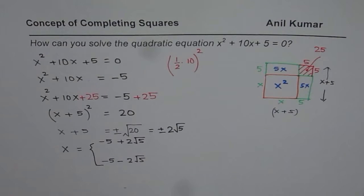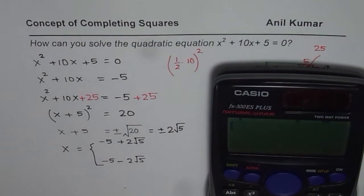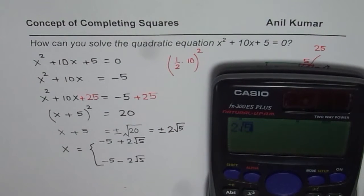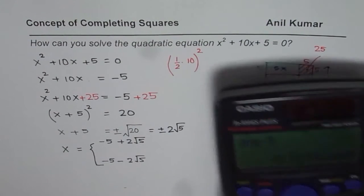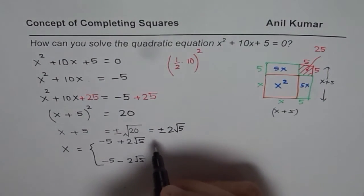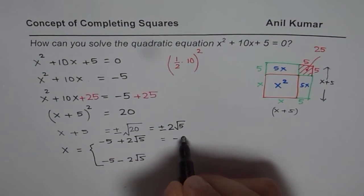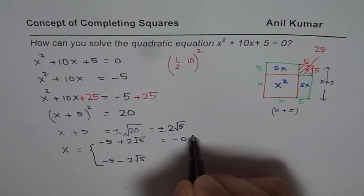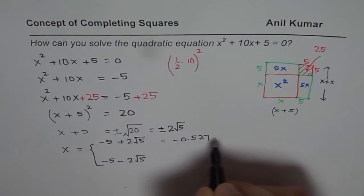We can calculate 2√5 - 5 in decimals, which gives -0.527. This could be rounded to two decimal places as -0.53. This is also approximate.